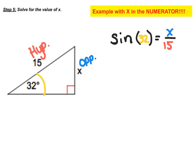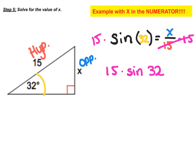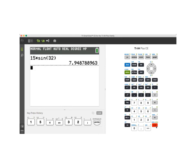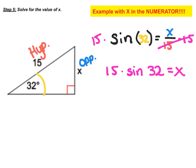Now if we had an example where x is in the numerator, we still clear the fraction first by multiplying both sides by 15, so it becomes 15 times sine of 32 equals x. Plugging this into the calculator gives a final answer of 7.949 equals x.